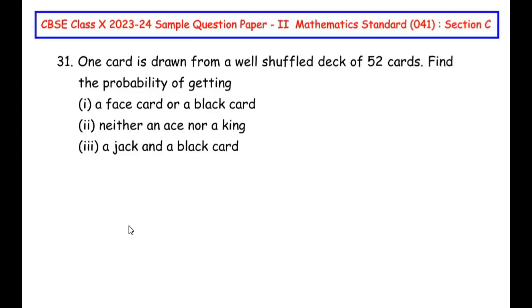Hello and welcome to my channel. In this video we are going to solve the 31st question from CBSE Class 10 2023-24 sample question paper set 2 for mathematics standard with subject code 041, Section C, where each question is of three marks. This question is from the probability chapter. One card is drawn from a well-shuffled deck of 52 cards. Find the probability of getting: a face card or a black card; neither an ace nor a king; a jack and a black card.